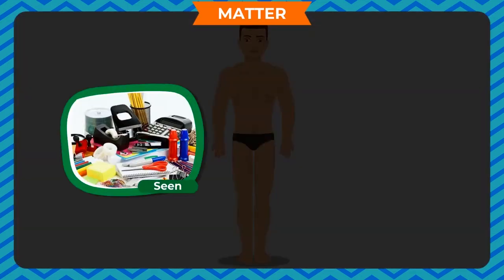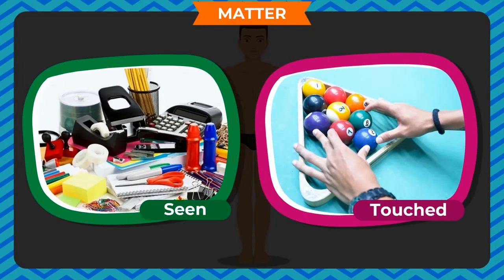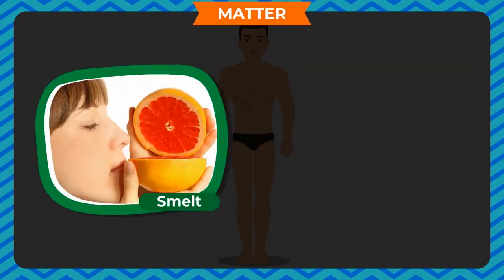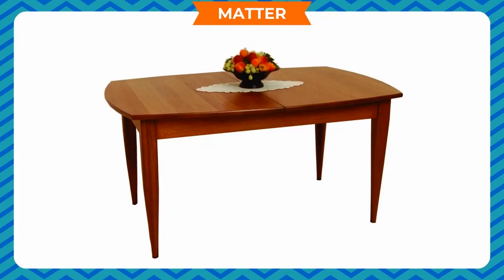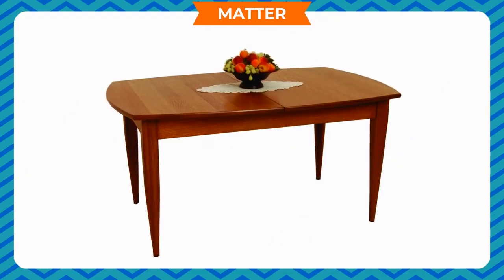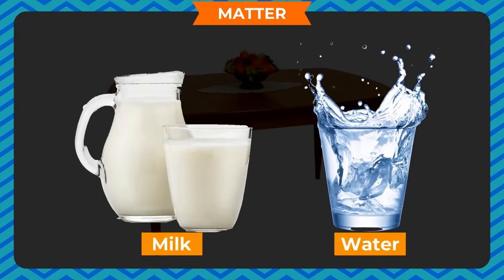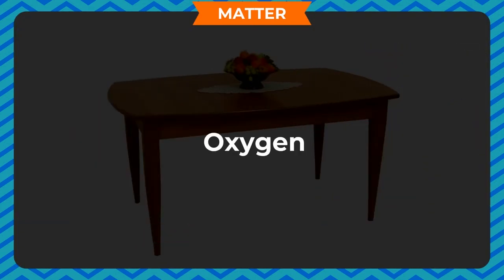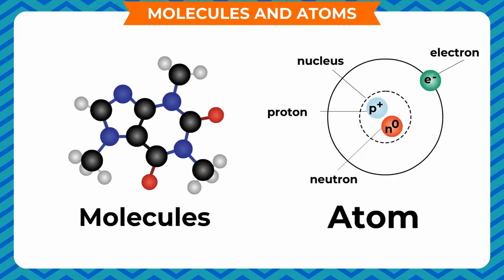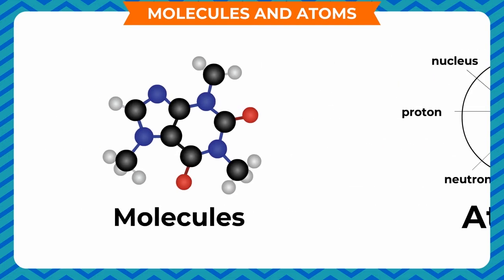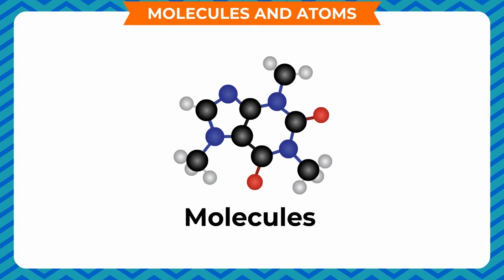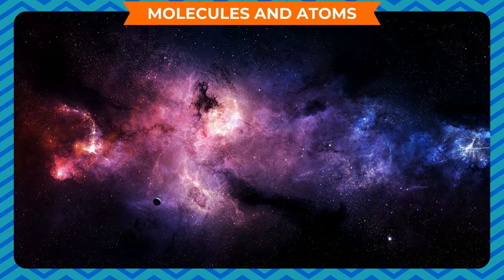Matter can be seen, touched, smelt, or tasted. It can be a solid like a table, a liquid like milk or water, or a gas like oxygen. Matter consists of very small particles called molecules.